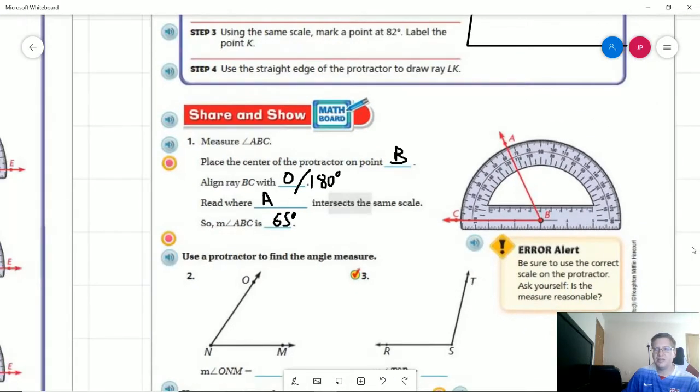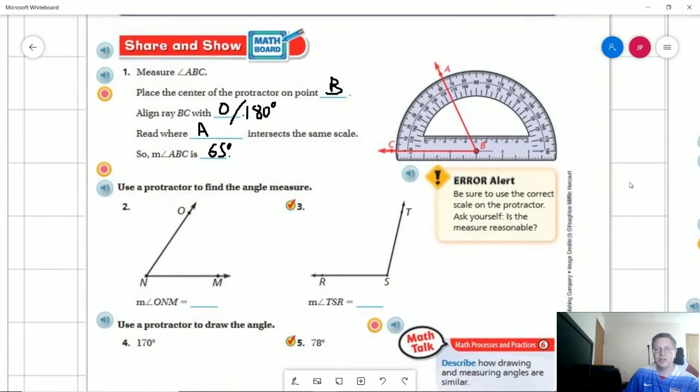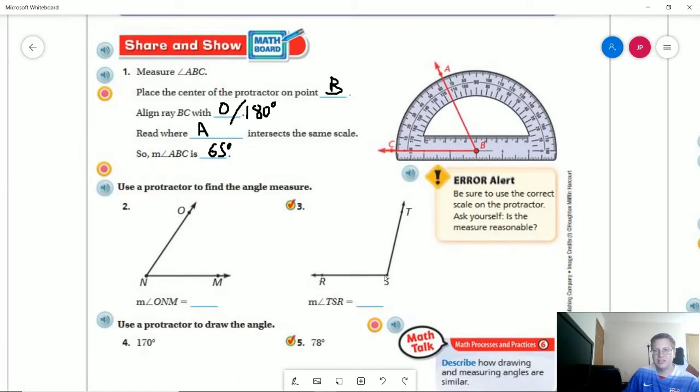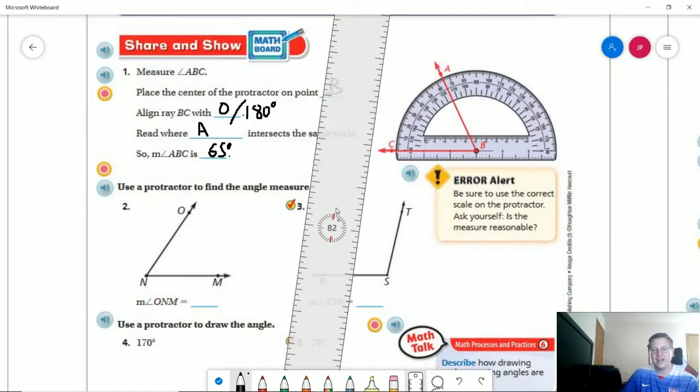Number three, we are going to go ahead and look, and we know that what we are going to have is going to be larger than a 90 degree angle because it is farther open than a straight line would be here. So we're probably looking at something around the 100 or so degree mark. Let's find out what we have.